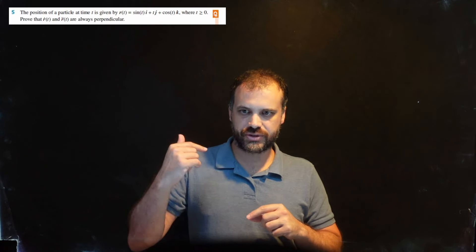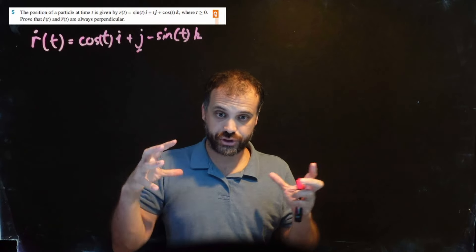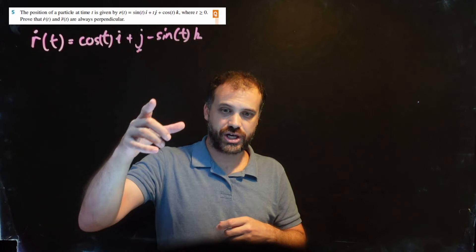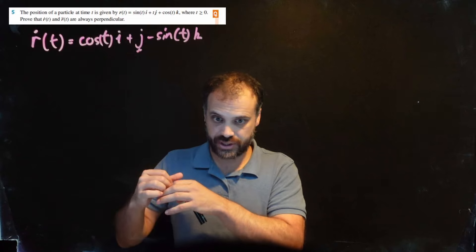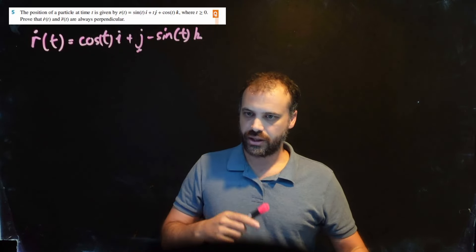All we're going to do is find the velocity and find the acceleration. This video is not about doing that, so you should be able to do it quickly by finding the derivative and then the derivative of that. There's the velocity - I've just derived the original function. Just be careful: the derivative of tj is just j, since the derivative of t is 1.